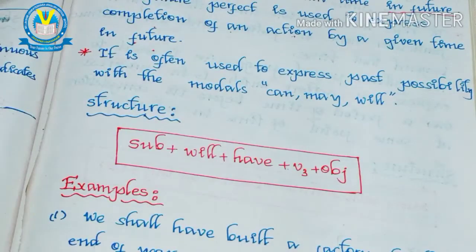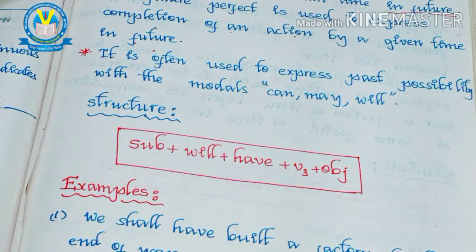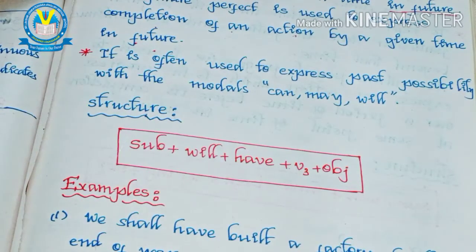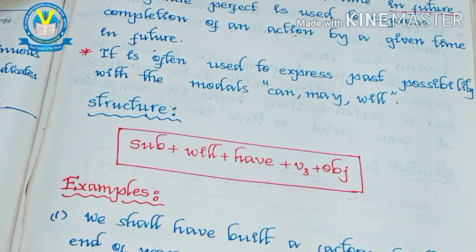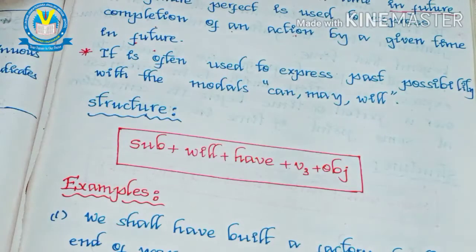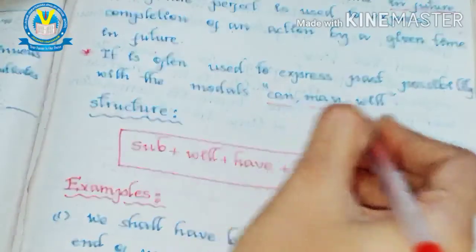It is also often used to express possibility, using the modal verbs can, may, and will. When we are talking about future actions but we don't know whether the action will take place or not, we use the words can, may, and will to express those possible conditions.